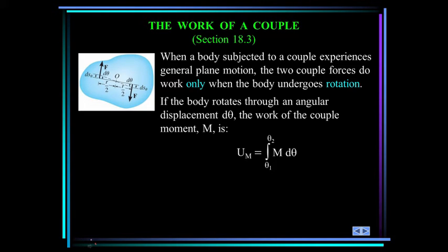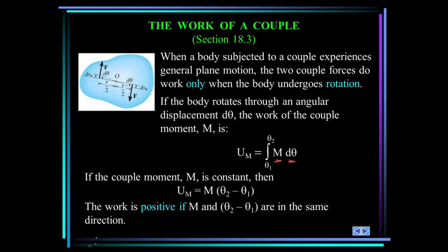The work of a couple — you can also call it a moment. If there's an external moment being applied to a body, then the work done by that moment is the integral of the moment over theta. If the moment is constant, you can bring it outside the integral sign, so the work done is the moment times delta theta. If the moment is not constant, you use the integral form, and you'll need the moment as a function of theta.